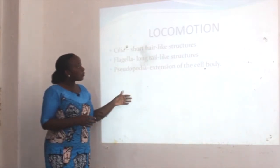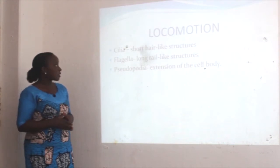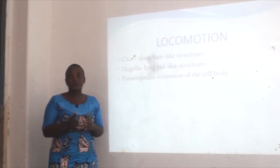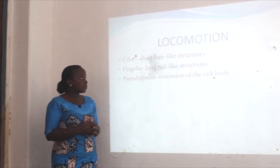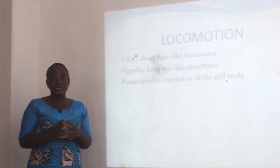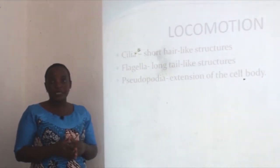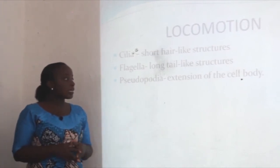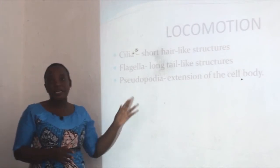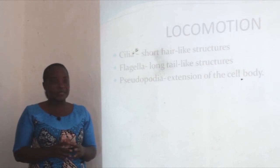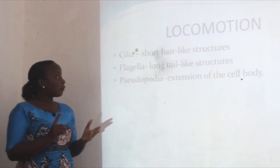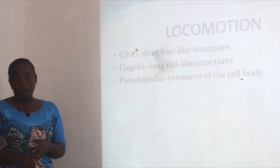Locomotion in protozoans can take three forms. It can be by the use of cilia, which are short hair-like structures as seen in Paramecium; by flagella, which are long whip-like structures, as in Euglena; and by pseudopodia, which are extensions of the cytoplasm also called false feet, found in amoebas.